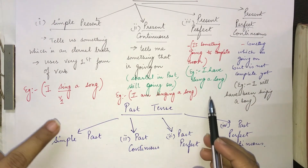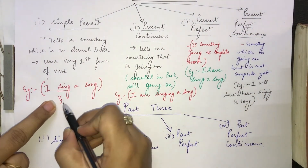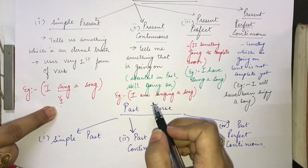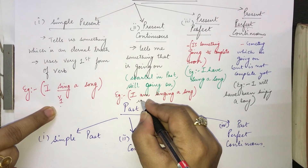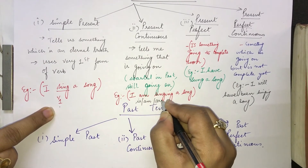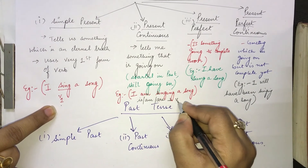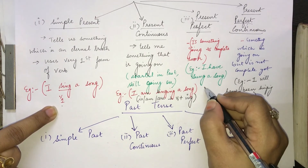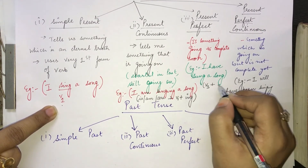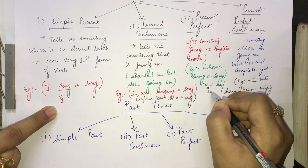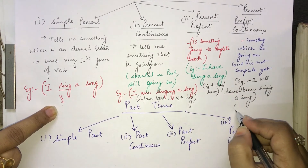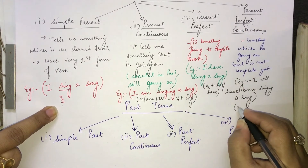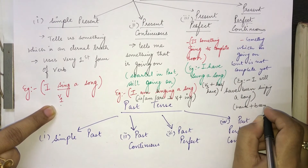Let us look at the verb forms for each present tense category. Simple present uses V1 form — just 'sing.' Present continuous uses: is/am/are + V1 + ing. Present perfect uses: has/have + V3 form. And present perfect continuous uses: will/shall + have + been + V1 + ing.